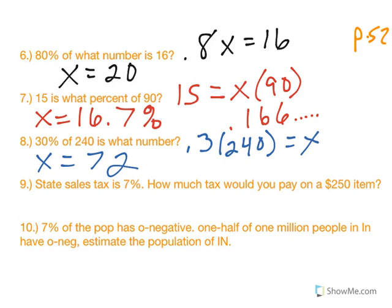Number nine. State sales tax is 7%. How much tax would you pay on a $250 item? Well, 7% of the item is taxed. So 7% of $250, you would pay $17.50 in tax.